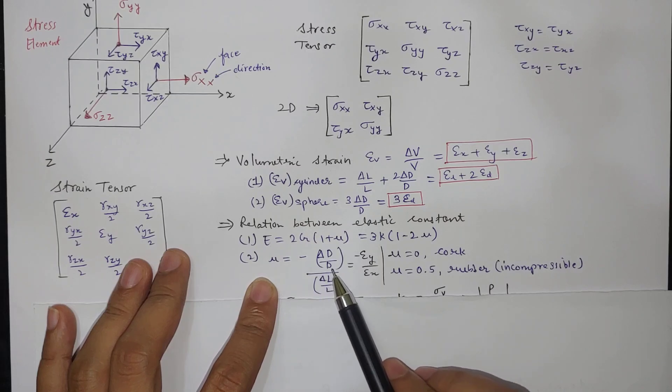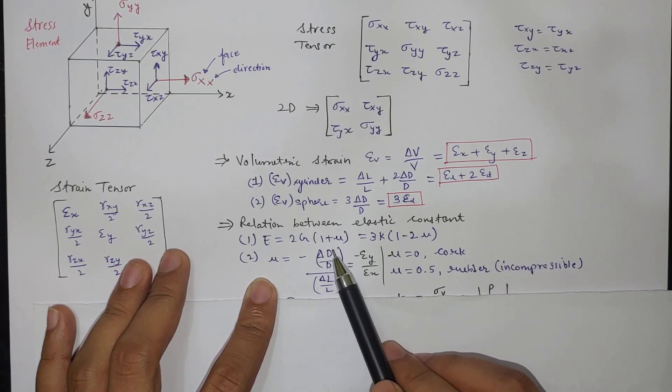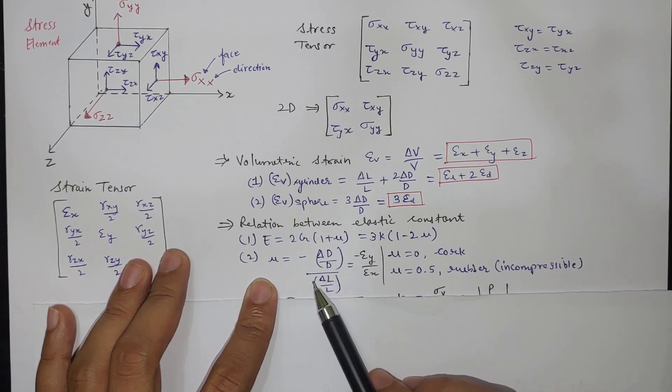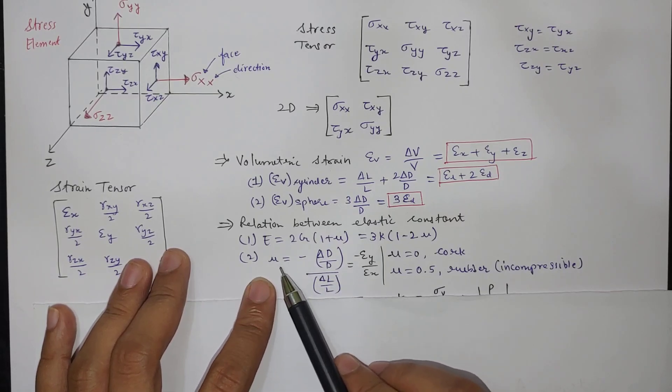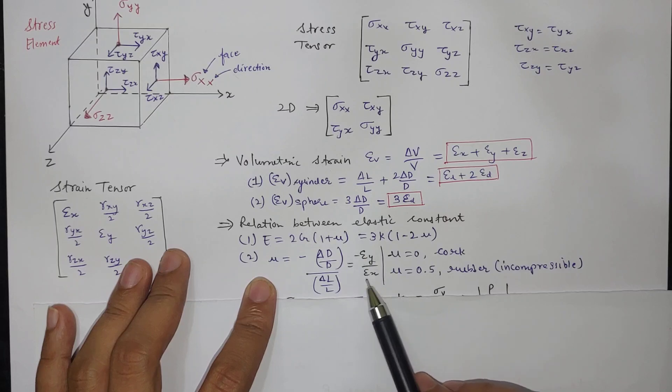So here delta D by D upon delta L by L. Minus sign is because when length increases diameter decreases. So this value comes out to be negative. Delta D is final diameter minus initial diameter and delta L is final length minus initial length. So negative signs will make mu positive. It's minus epsilon Y upon epsilon X. Strain in Y direction upon strain in X direction. Similarly it will be equal to strain in Z direction upon strain in X direction.